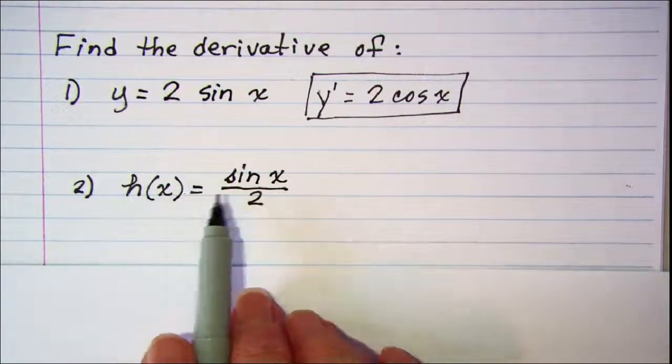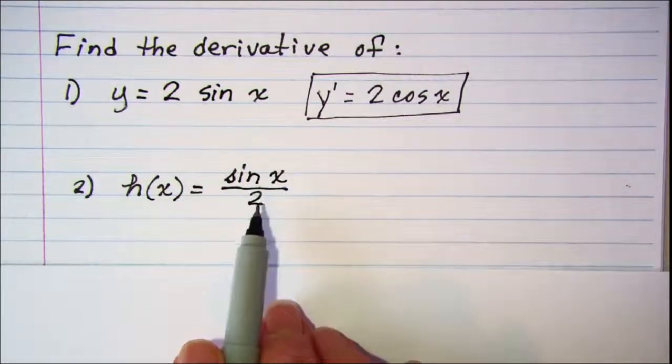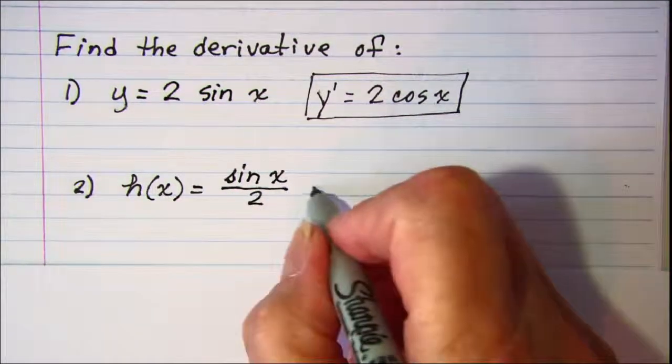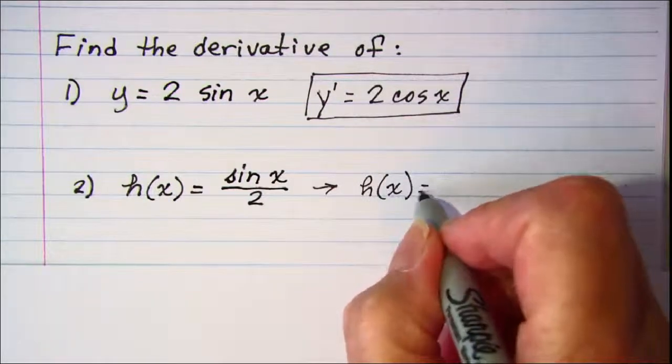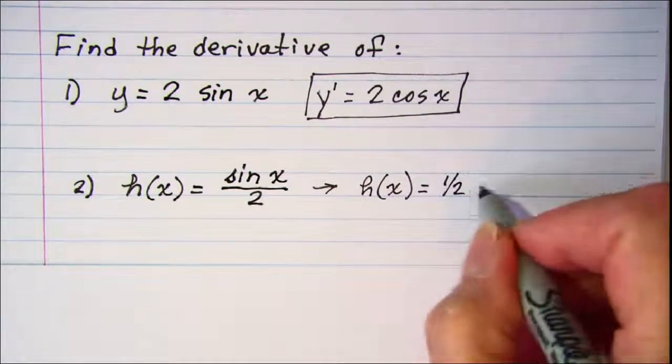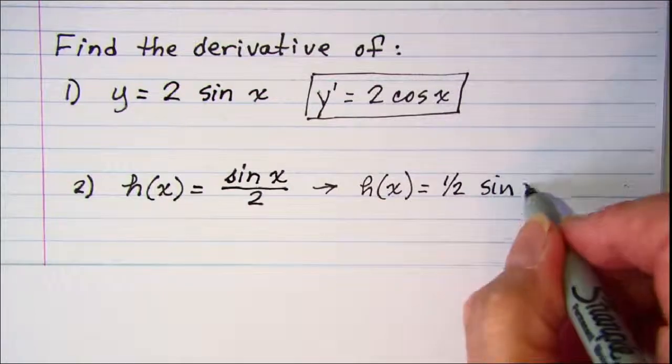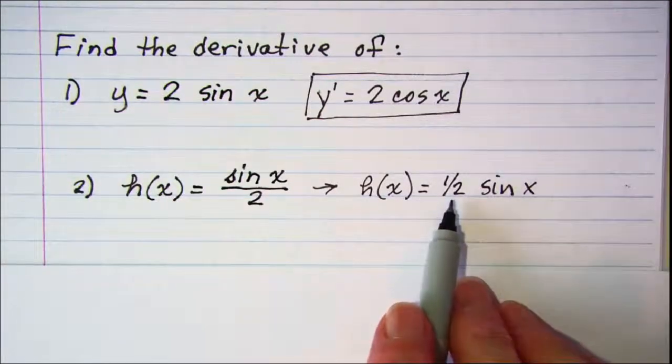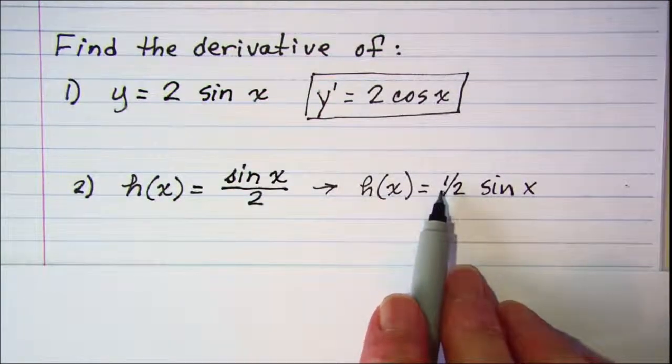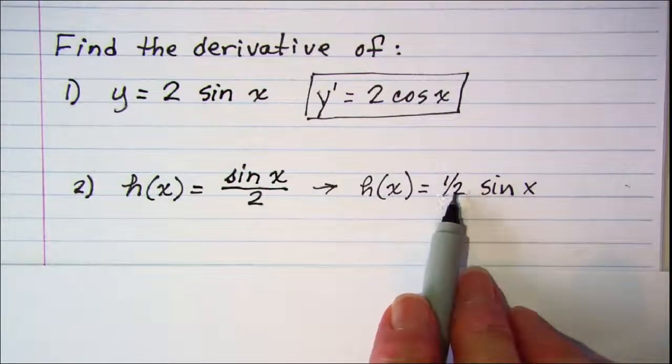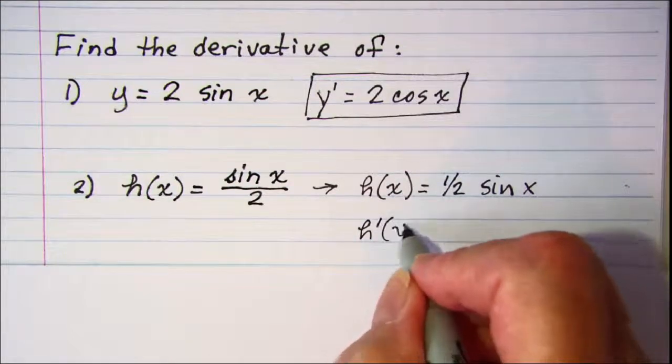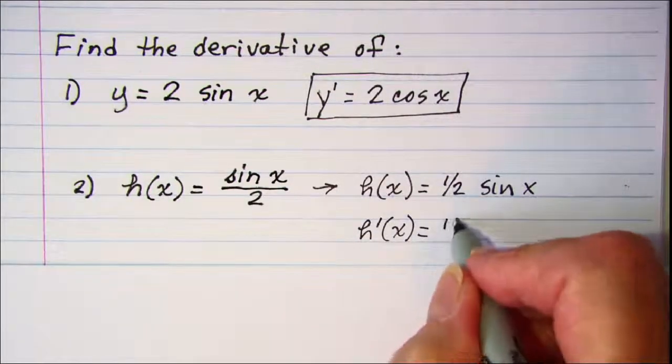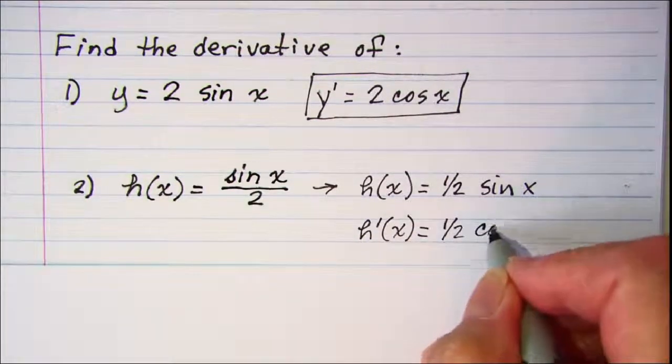If h of x equals sine x divided by 2, this is the same as h of x equals one-half sine x. The constant multiple rule says that this derivative is one-half times the derivative of sine x. So h prime equals one-half cosine x.